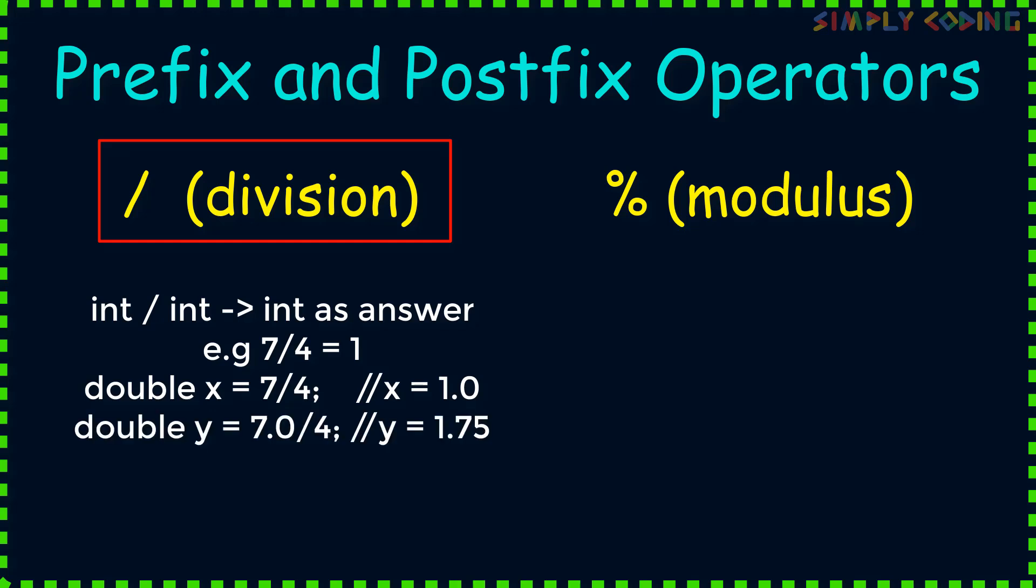But if one of the values, numerator or denominator, is float or double, then there is a type promotion and the calculation happens in double. In most of the prefix postfix problems, you will see mostly integer division happening.